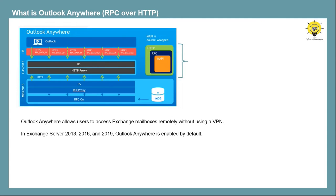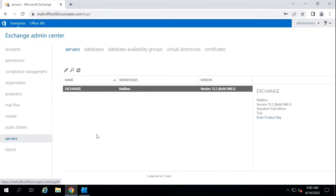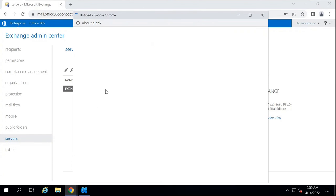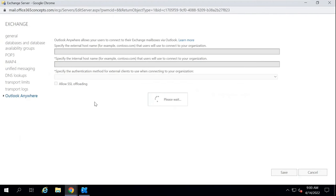In Exchange Server 2013, 2016, and 2019, Outlook Anywhere is enabled by default. But still, you need to make certain changes in Exchange Server so that Outlook clients can use Outlook Anywhere to connect to Exchange mailboxes. If you want to configure Outlook Anywhere from Exchange Admin Center, you can go to Servers, then double-click on your mailbox server, and then go to Outlook Anywhere.